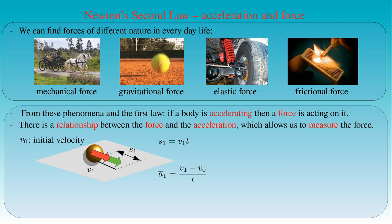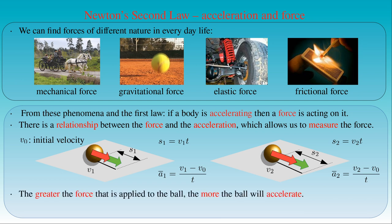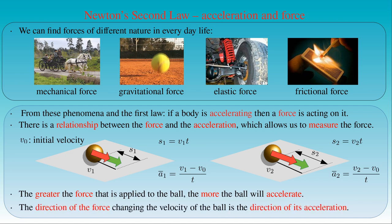This average acceleration a1 is associated with the mechanical force we applied to the ball when we pushed it. If we apply more force, the ball will travel with speed v2, which is greater than v1. The distance s2 equals v2 times t and is greater than s1. As a result, the average acceleration a2 = (v2 − v0) / t is also greater than a1. This experiment shows the following relationship: the greater the force applied to the ball, the more the ball will accelerate. We can also associate the direction of the force acting on the ball with the direction of its acceleration.